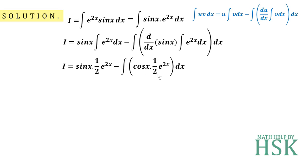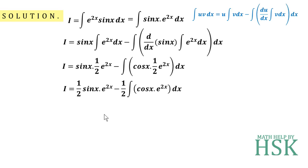I am going to write this in a cleaner manner: (1/2)sin(x)·e^(2x) minus (1/2) times the integration of cos(x)·e^(2x) dx.